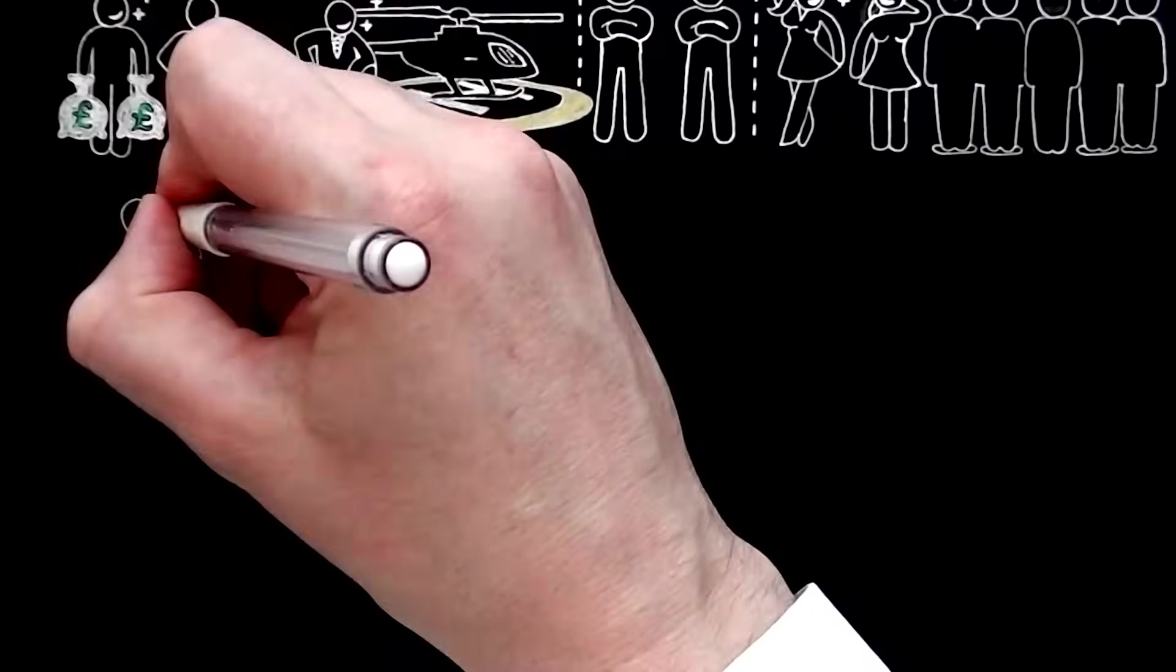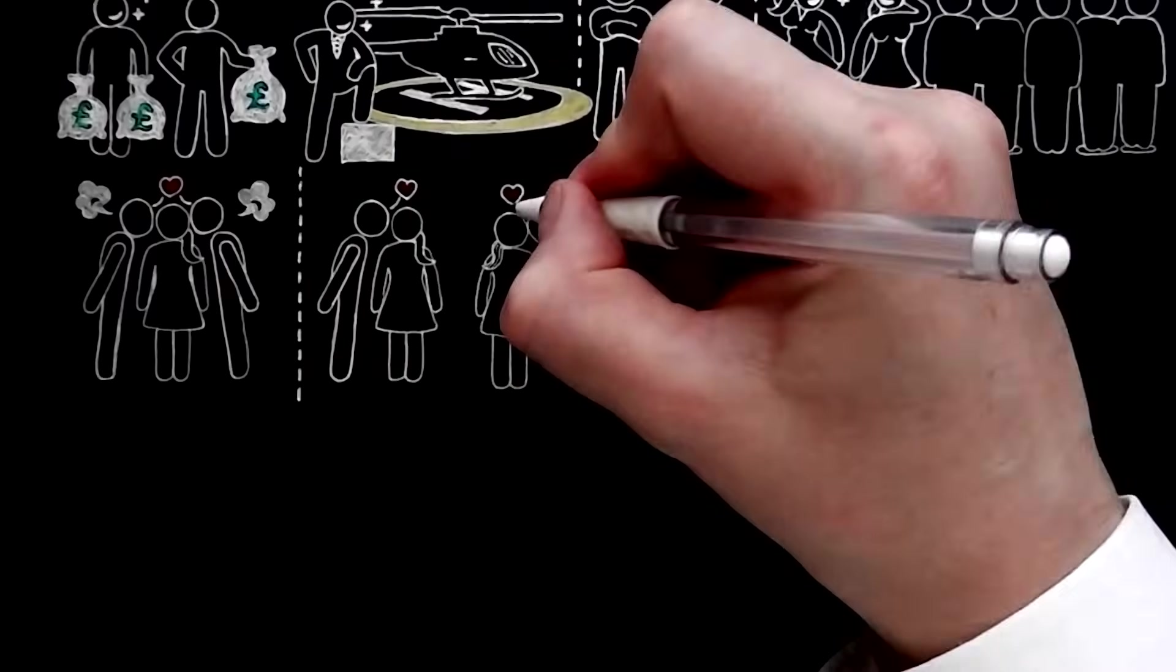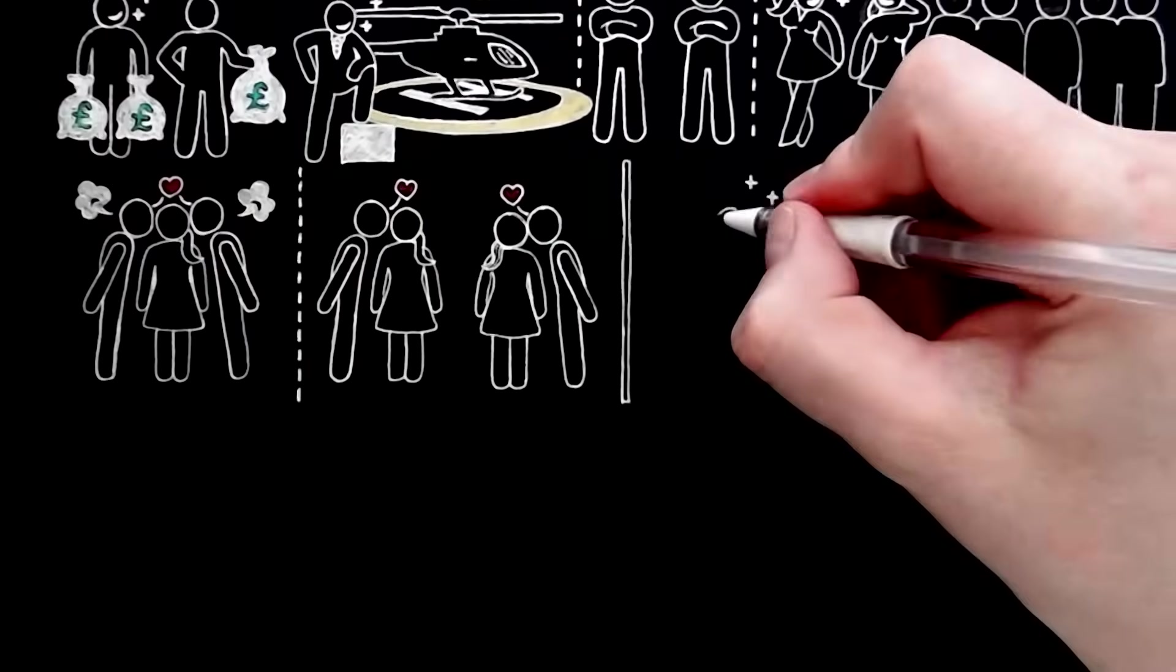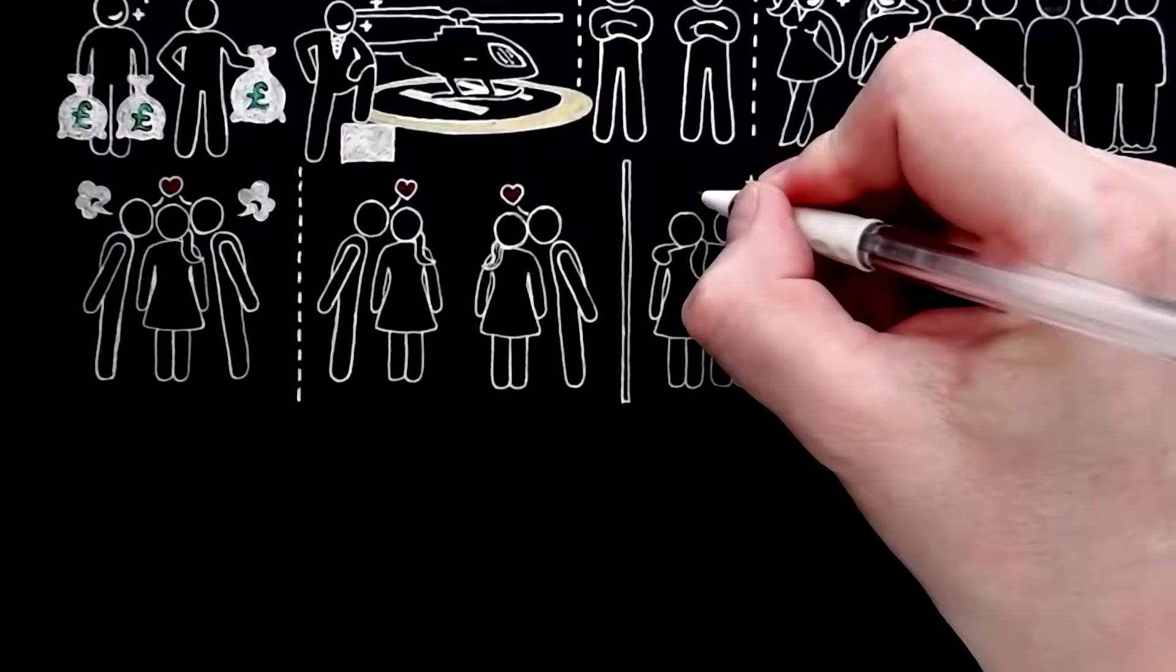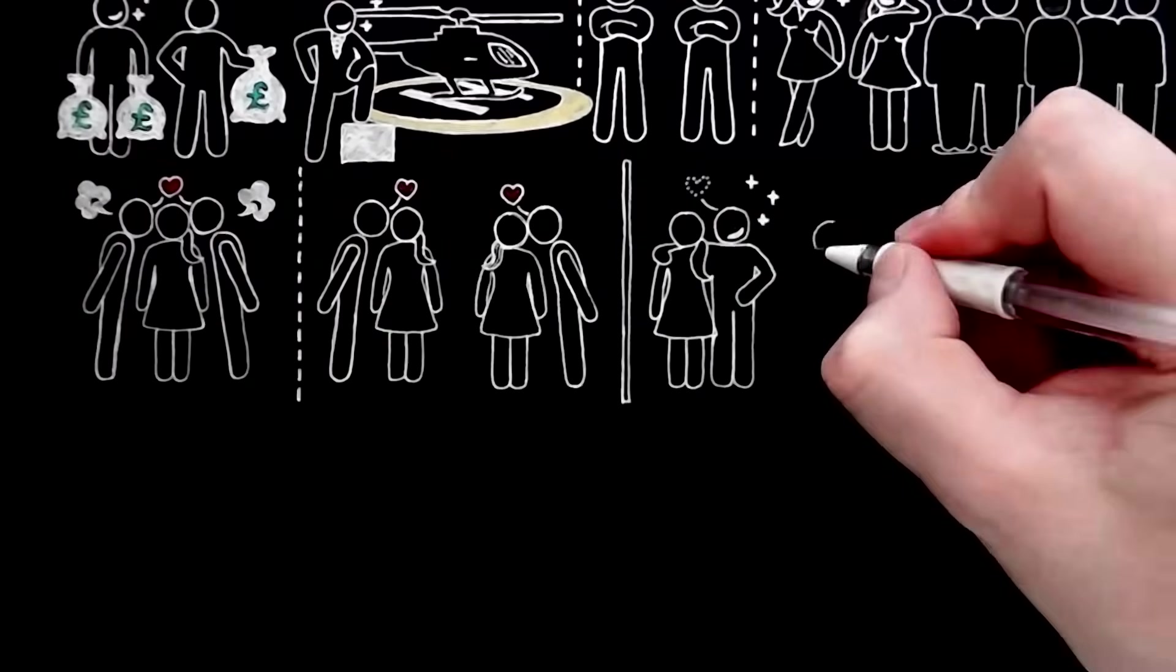The sexual impulse may drive two men into competition if they both want the same girl, but that is only by accident. They might just as likely have wanted two different girls. But a proud man will take your girl from you, not because he wants her, but just to prove to himself that he is a better man than you.